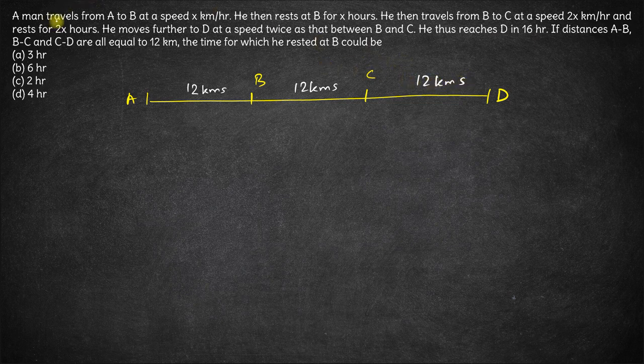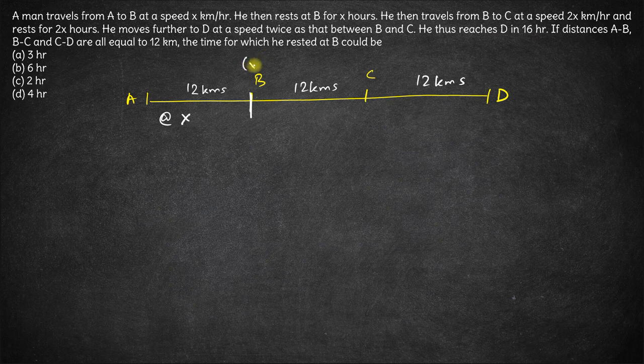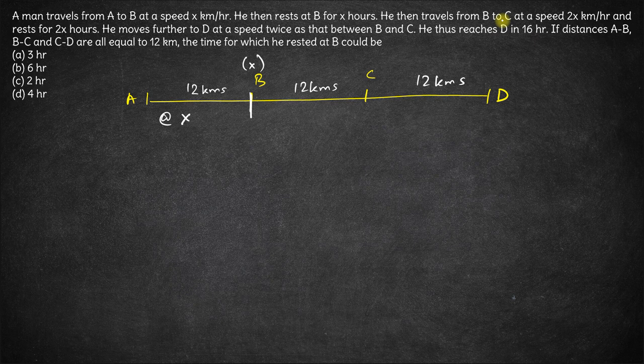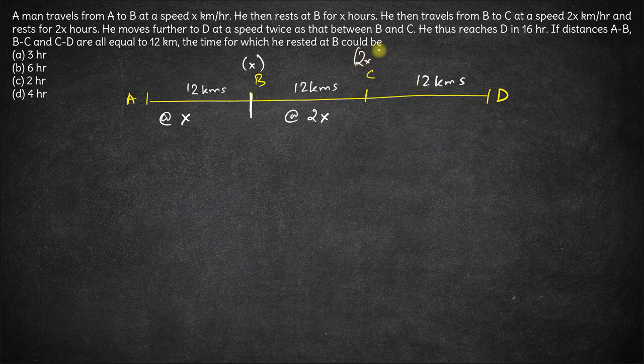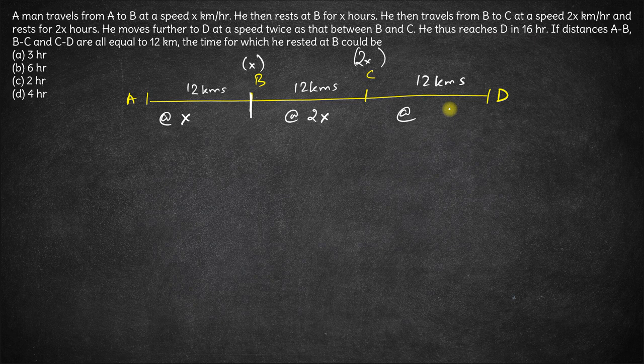Let's see how is he going. Man travels from A to B at a speed of x km per hour, then he takes a rest for x hours at B. So he rests at B, then he travels from B to C at a speed of 2x, and then rests for 2x hours. So at C he will rest for 2x hours and then he moves further to D at a speed twice that between B and C. So between B and C the speed was 2x, so between C and D the speed will be 4x.